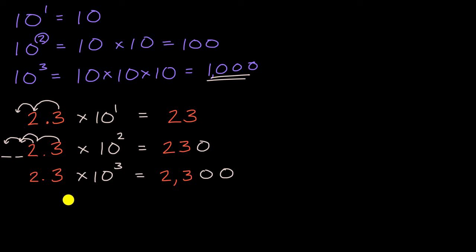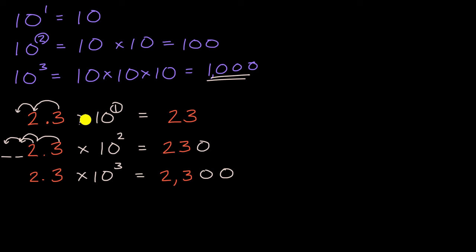The pattern is: when you multiply a number by 10 to some power, you shift all the digits to the left by that power. And if you divide by a power of 10, the same thing happens in reverse — you shift your digits that many places to the right.